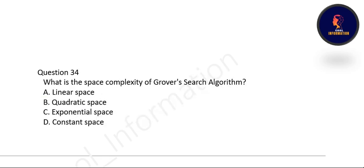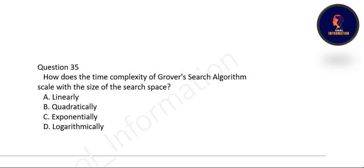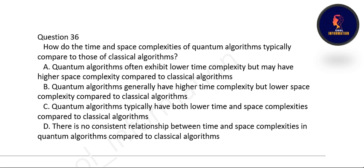Next question: what is the space complexity of Grover's search algorithm? Grover's search algorithm has constant space. Option D is correct. Next question: how does the time complexity of Grover's search algorithm scale with the size of the search space? It scales quadratically. Option B is correct. Next question: how do the time and space complexities of quantum algorithms typically compare to classical algorithms? Quantum algorithms often exhibit lower time complexity but may have higher space complexity compared to classical algorithms. Option A is correct.